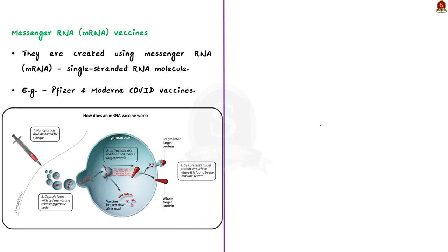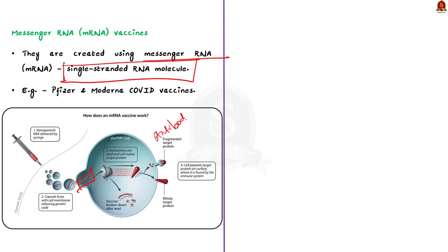Finally, mRNA vaccines — messenger RNA vaccines, in short called mRNA — are created using messenger RNA, which is a single-stranded RNA molecule. The mRNA vaccine works by introducing a piece of mRNA into the human body. The mRNA is similar to a small piece of a protein found on the virus's outer membrane, and using this mRNA, the cells in our body produce the viral protein. Subsequently, our immune system recognizes the protein as foreign and produces specialized proteins called antibodies, which help protect the body against infection. COVID-19 vaccines like Pfizer and Moderna are examples of mRNA vaccines.